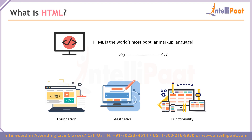In HTML we make use of entities called tags, and we have elements and standard words which we use to write code that builds the foundation of a website. Looking at three things — foundation, aesthetics, and functionality — HTML mostly focuses on the foundation part. For aesthetics, we have CSS (Cascading Style Sheets), which is responsible for the design of a website.